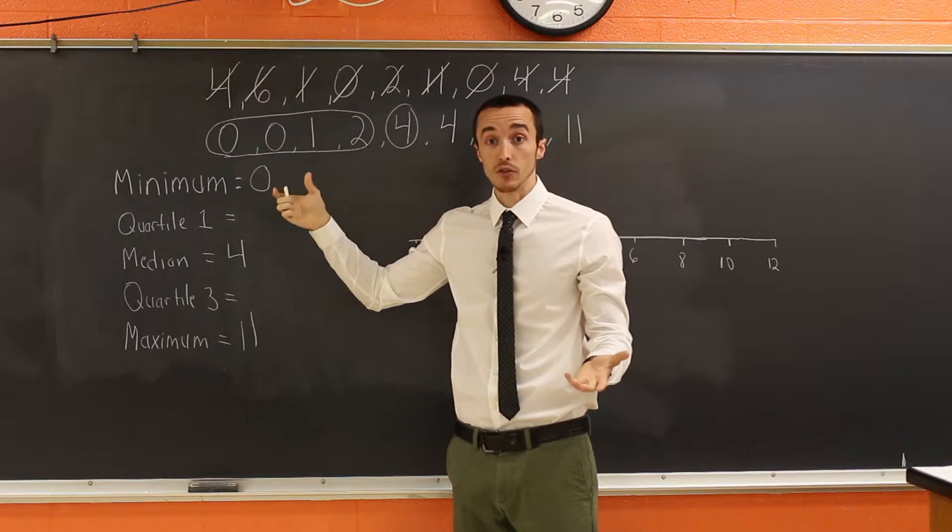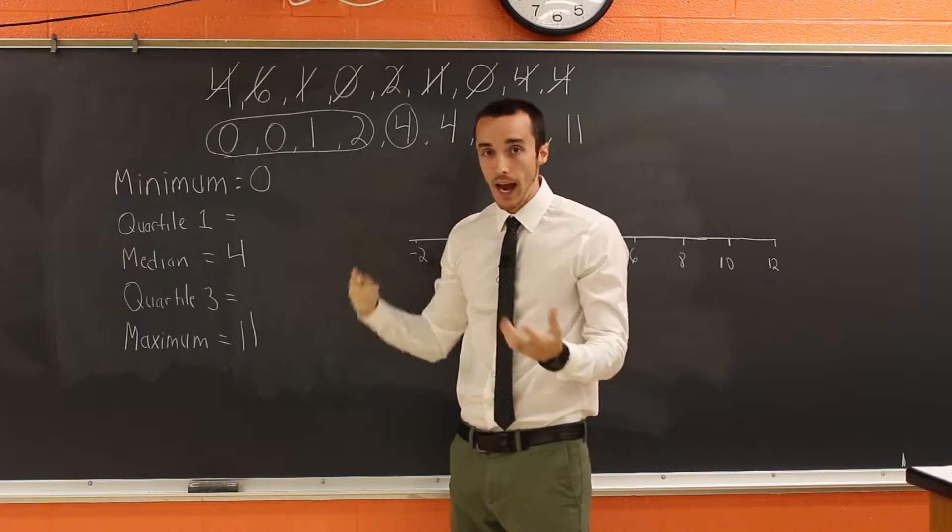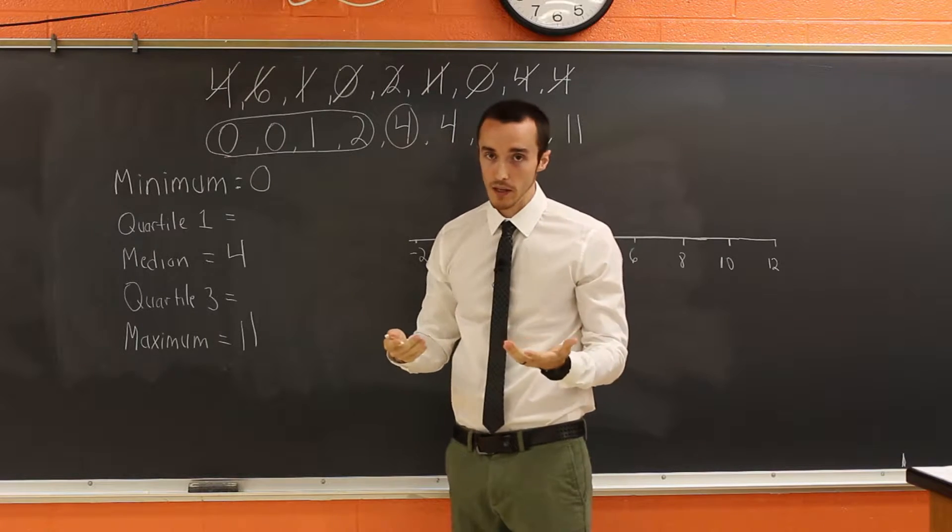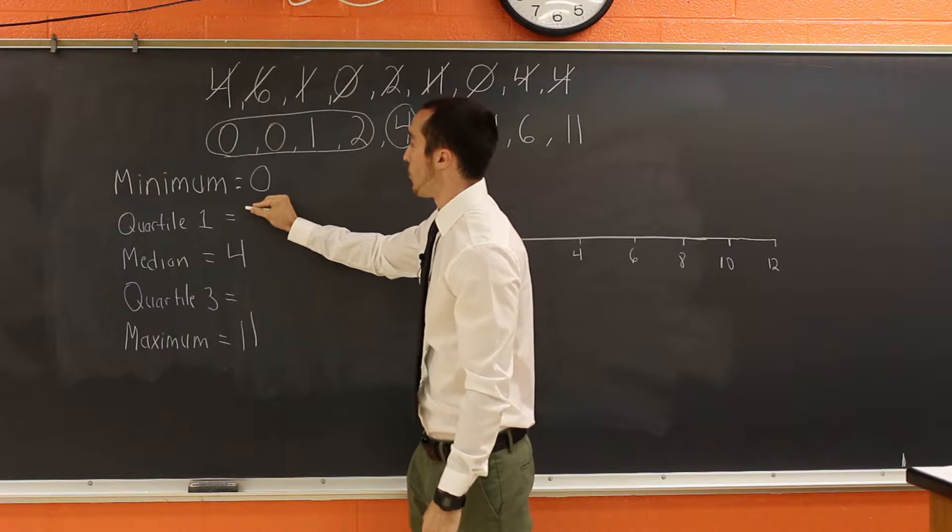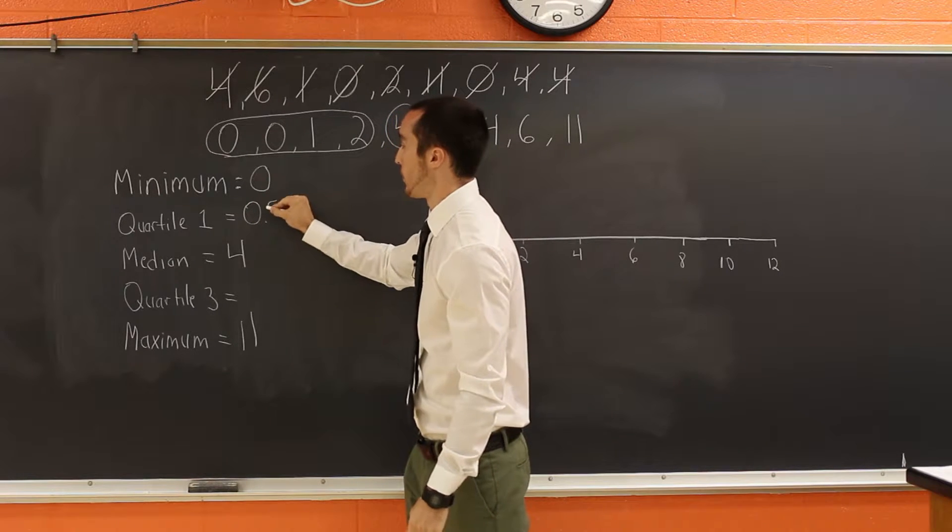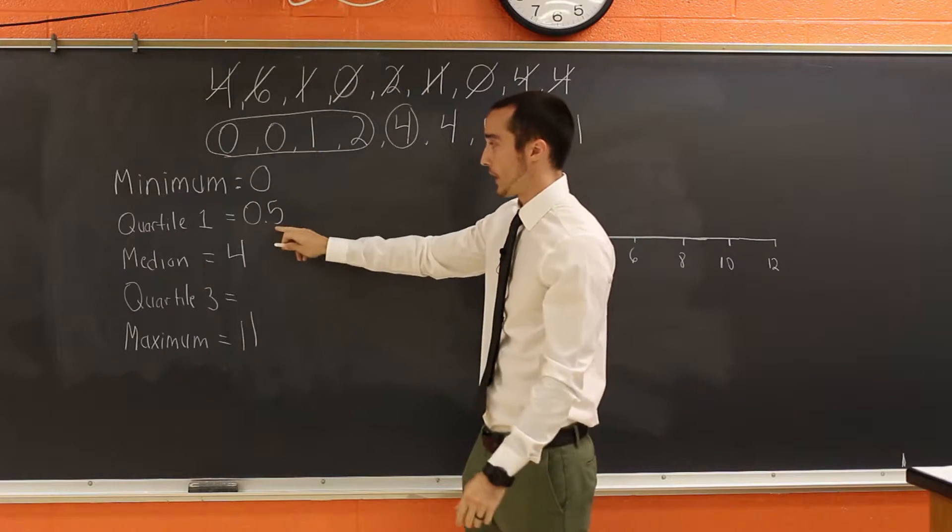Well, let's just average the two closest ones. So we've got zero and one. And the average of that, if you take zero plus one divided by two, it's 0.5 or half, one half. So our quartile one is 0.5 because that's the number that is equidistant in the middle of these two.